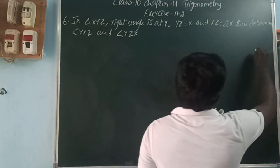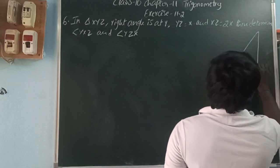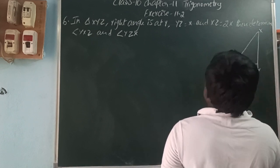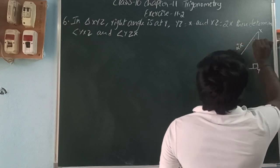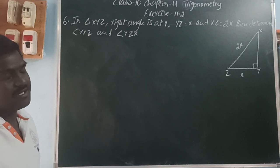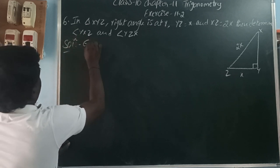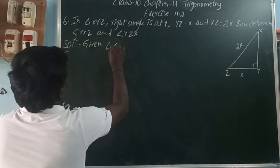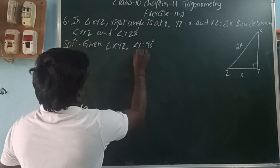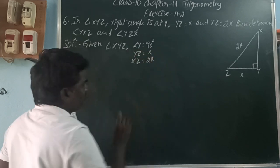Question 6: In triangle XYZ, right angle is at Y, and YZ is equal to X, XZ is equal to 2X. Then determine angles YZX and YXZ. Given: triangle XYZ with angle Y equal to 90 degrees, YZ equals X, and XZ equals 2X.